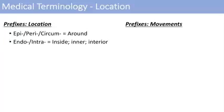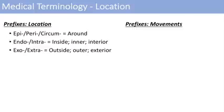The prefix endo or intra both mean pretty much the same thing — inside, inner, or interior. Think of intracellular or the endosome. The opposite of those are exo and extra, which mean outside, outer, or exterior. Think of exocytosis or the extracellular environment.